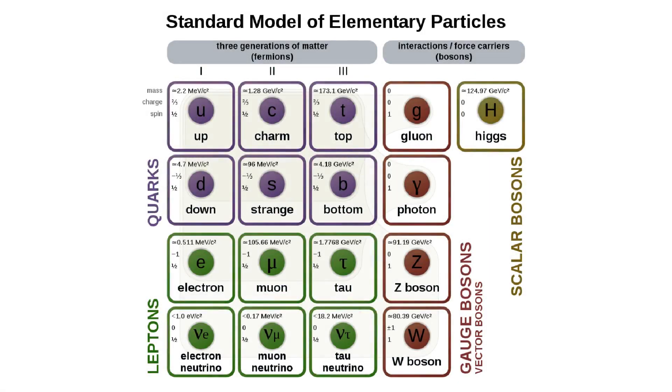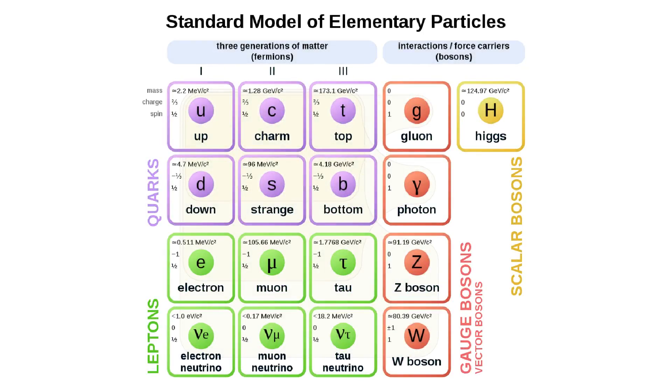Of all known particles, only two are massless. One is the gluon. The other is the photon. It was necessary for life in the universe that photons be massless. Had they not been, there would be no atoms.